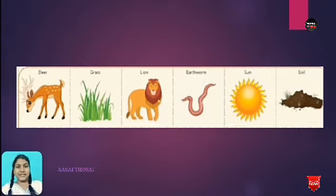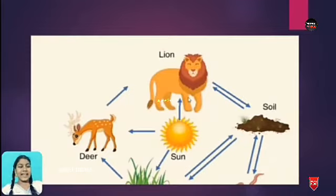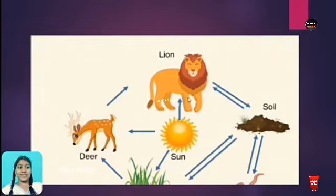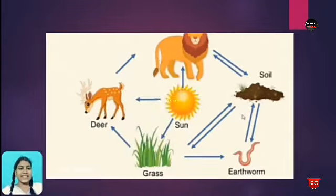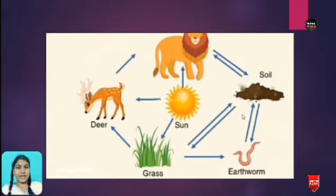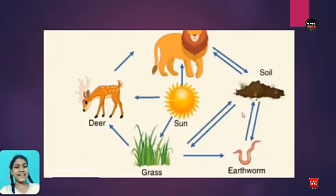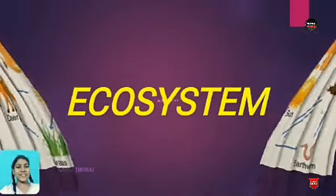Time is up. Please pause the video if you need more time. Now let's see the answers: the lion depends on deer, the deer depends on grass, and the grass depends on the sun. The grass also depends on the soil, the soil depends on the earthworm, and the earthworm depends on the soil because earthworms live in soil.